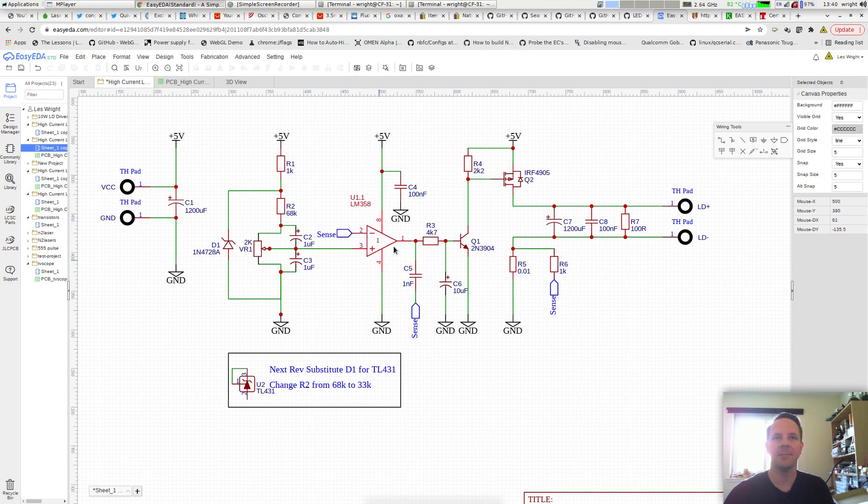This is the schematic for the 10 watt laser diode driver that I've designed. Laser diodes will draw as much current as you can throw at them. If you just connect one up to a bare supply, it would draw current until it melted, and that's obviously bad. So what we need is a current regulator and that's essentially what this is. It's an adjustable current regulator based around the LM358.